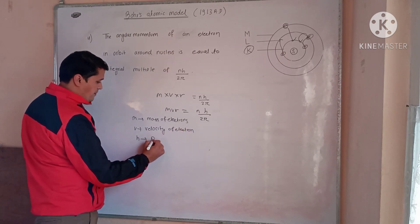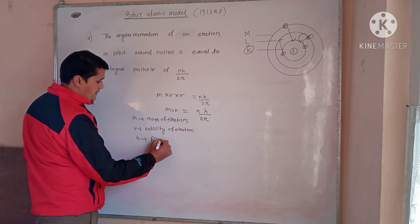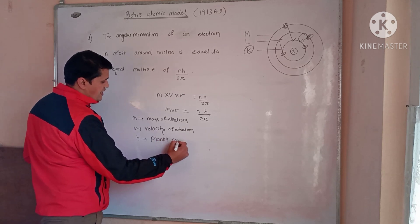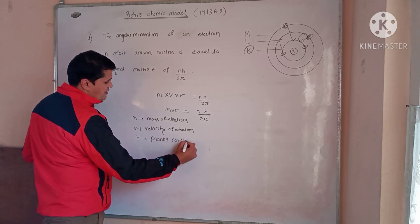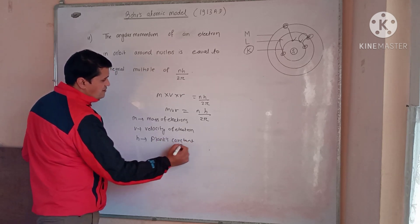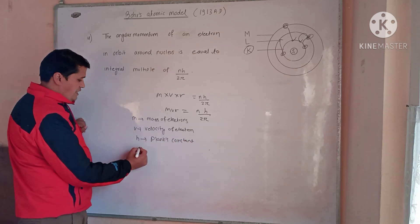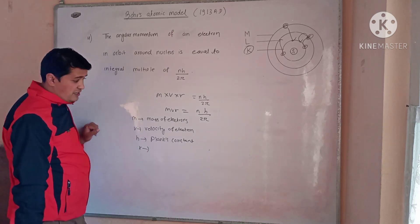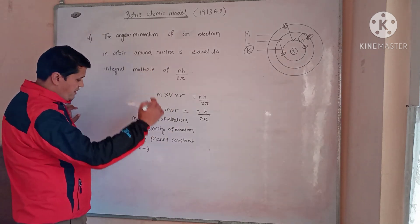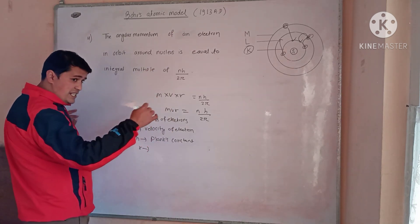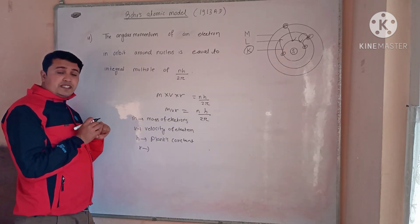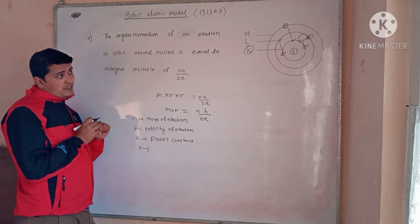Here, n is the principal quantum number, h is Planck's constant, and r is the radius of the orbit — that is, the distance between the nucleus and the electron shell.